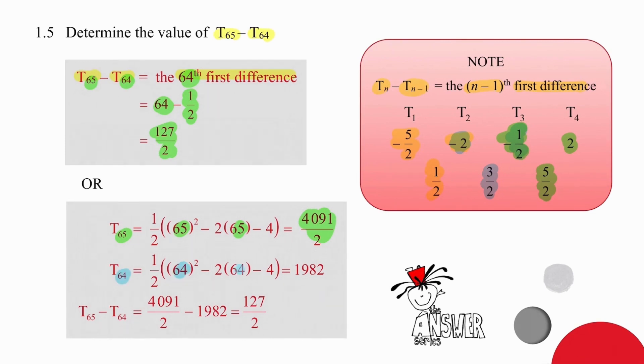You go back again, this time with 64. Substituting 64 into the quadratic pattern formula produces a result of 1982. Subtracting those two answers will produce the result you need of 127 over 2. You need to choose the method that you're going to use based on your understanding of the difference between n in the original pattern and n in the first differences pattern.